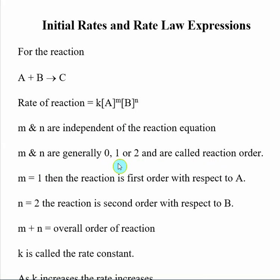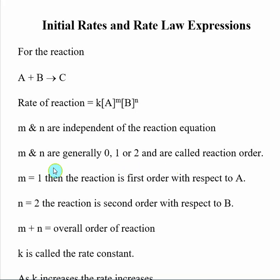We will talk about what aspects cause K to be large or small, and what we mean by reaction order, but we just want to start out by finding out what these numbers are. We use the term reaction order to describe how the reactants relate to the rate of reaction.